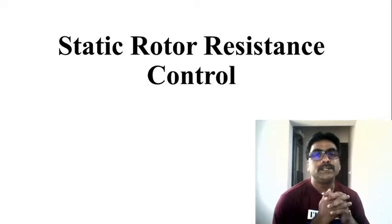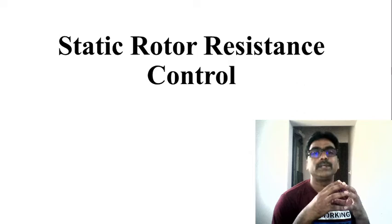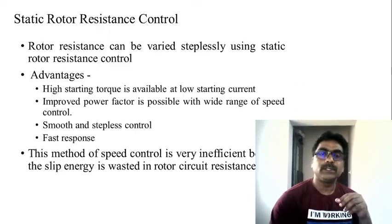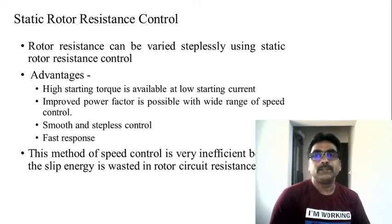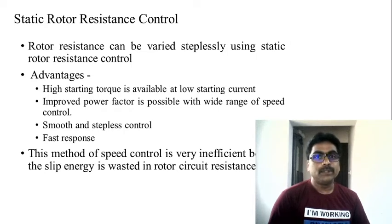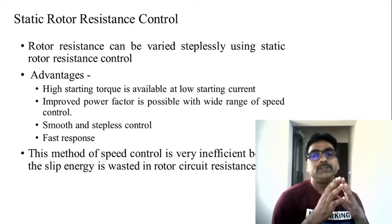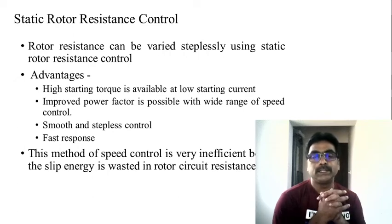We will use a typical power electronic circuit in order to vary the rotor resistance of the induction motor so that we can have control over it. In the conventional method, it is quite difficult to vary the resistance precisely. The main advantage of going for static rotor resistance control is that you can vary it steplessly, because we are going to use a chopper circuit at the rotor side.